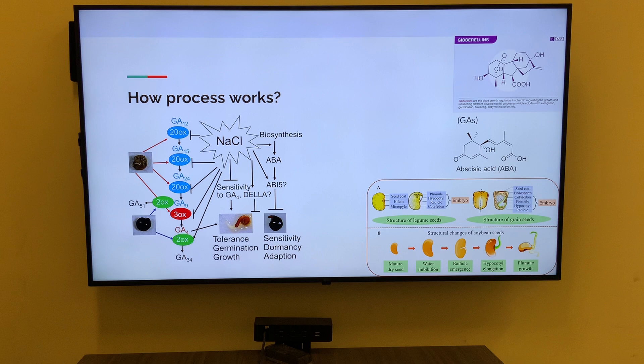Enzymes such as amylases, proteases, and lipases are activated to break down stored carbohydrates, proteins, and lipids in the endosperm and cotyledons of the seed. This provides the energy and building blocks necessary for the developing embryo to grow and expand.